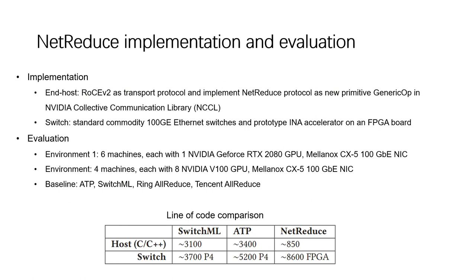For the implementation, at the end host we employ RC QP as a transport protocol and implement the NetReduce protocol as a new primitive collective operation in NCCL, which stands for NVIDIA Collective Communication Library. At the switch side, we use standard commodity 100 Gb Ethernet switches and prototype the INA accelerator on an FPGA board connected to the switch. Comparing NetReduce with existing INA solutions by lines of code, NetReduce uses less than 1000 lines of code by leveraging the RC QP protocol, far fewer than existing solutions.